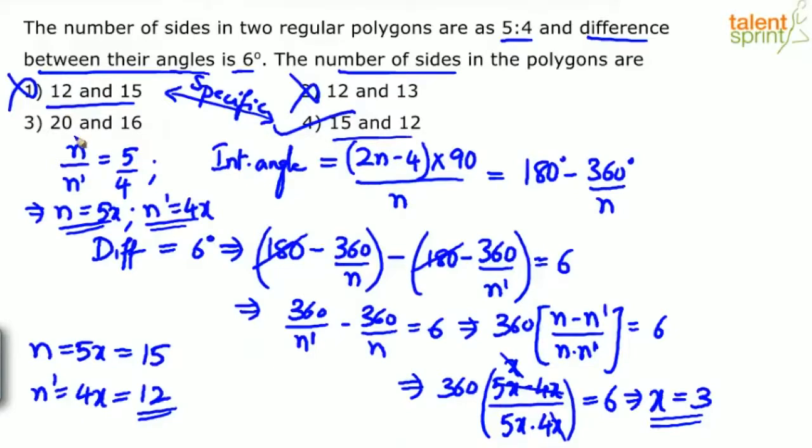Options 3 and 4 both satisfy 5:4. You can eliminate options 1 and 2, then check: for 20 sides what is the interior angle, for 16 sides what is the interior angle, and check if the difference is 6. The final answer is 15 and 12, option 4.